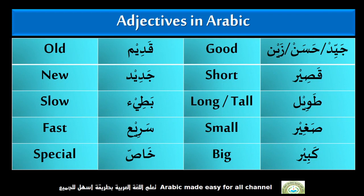I have given the Arabic as well as the English. I am going to read it so you can note the sound of the adjectives. Jaiyid, Hassan, Zen — Good. Asir — Short. Tawil — Long, Tall. Soreer — Small. Kabir — Big. Kadeem — Old. Jadid — New. Bati — Slow. Soreer — Fast.